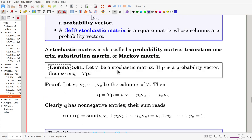Lemma 5.61. Let T be a stochastic matrix. If p is a probability vector, then q is also a probability vector.